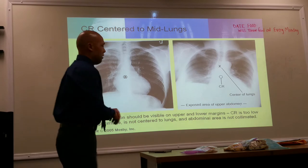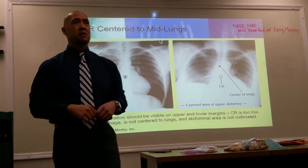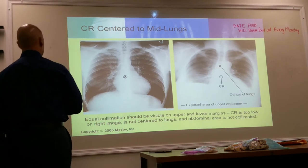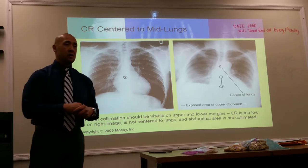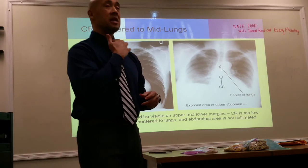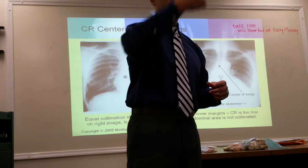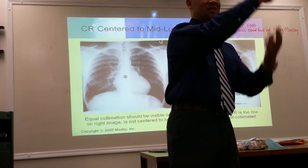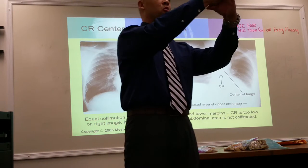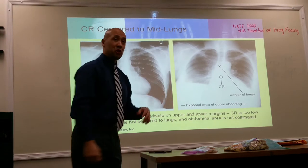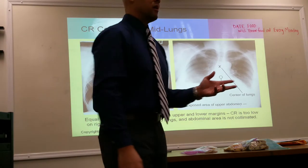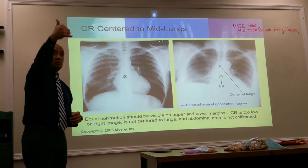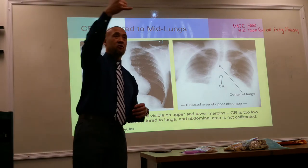Central ray is directed at the level of T7, which is mid-thorax. To get to T7, it's approximately three to four inches — the width of your fist — below the jugular notch for an AP projection. For a PA, your landmark is the vertebral prominence of C7, and you use the 'hang loose' hand shape — about seven to eight inches below the prominence for females and males respectively.